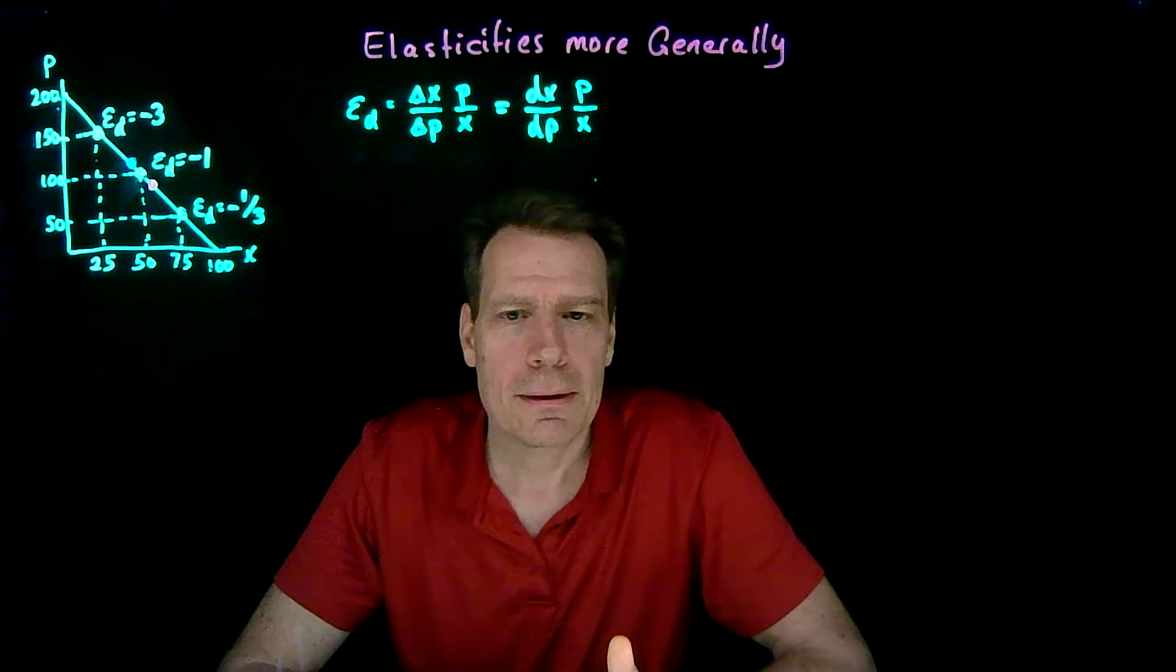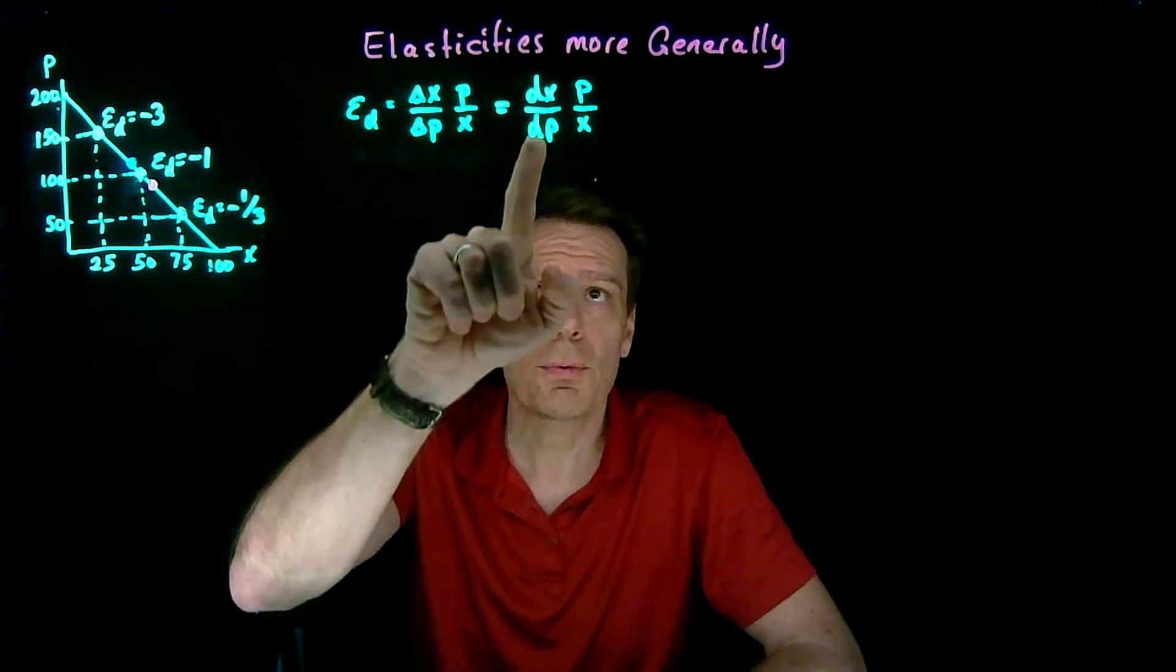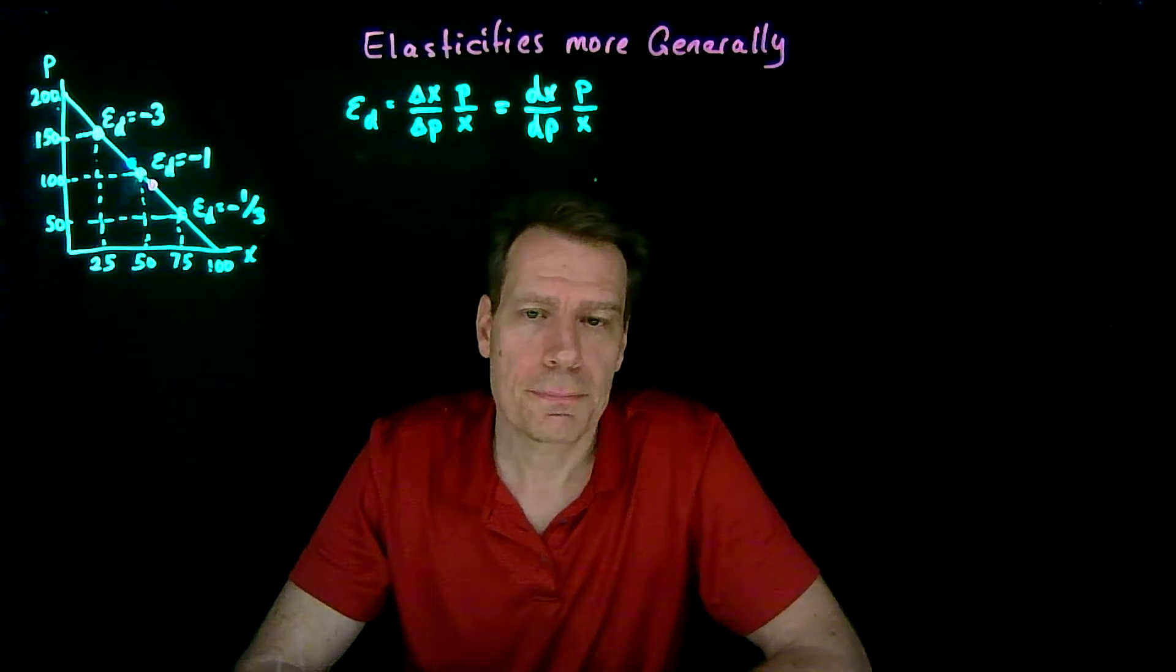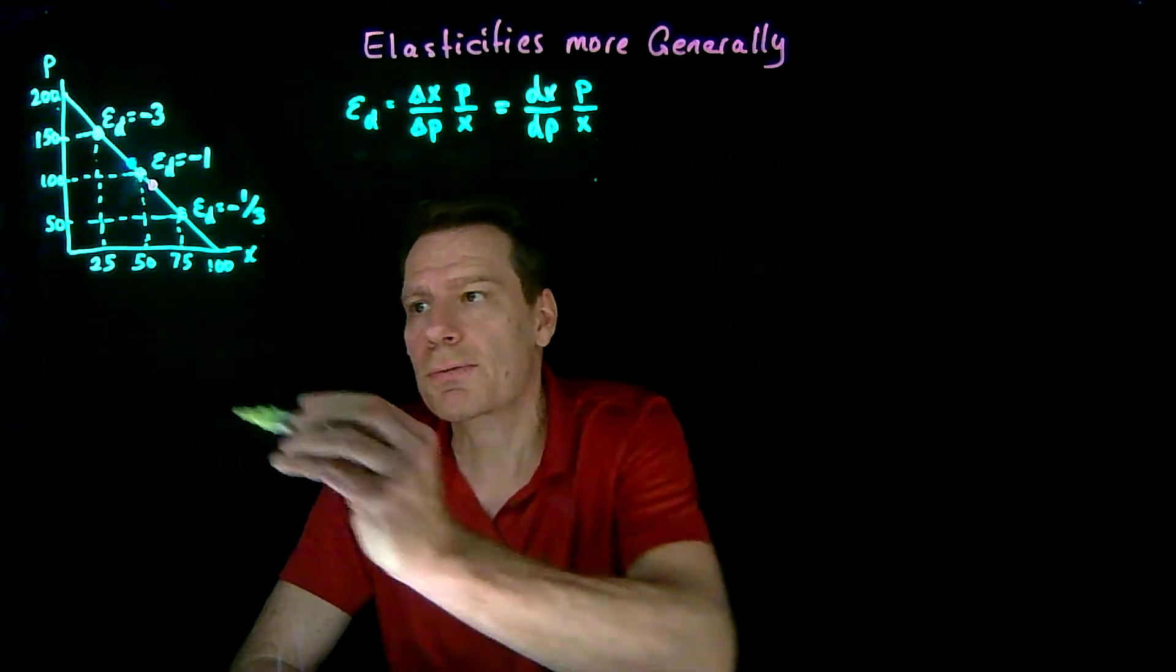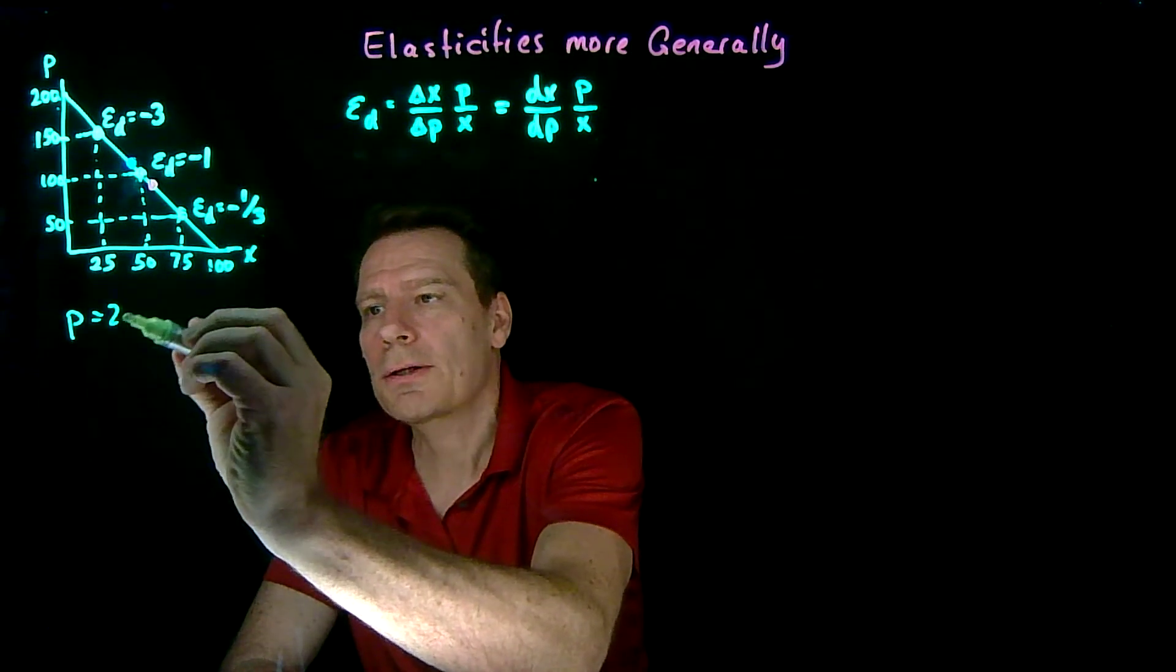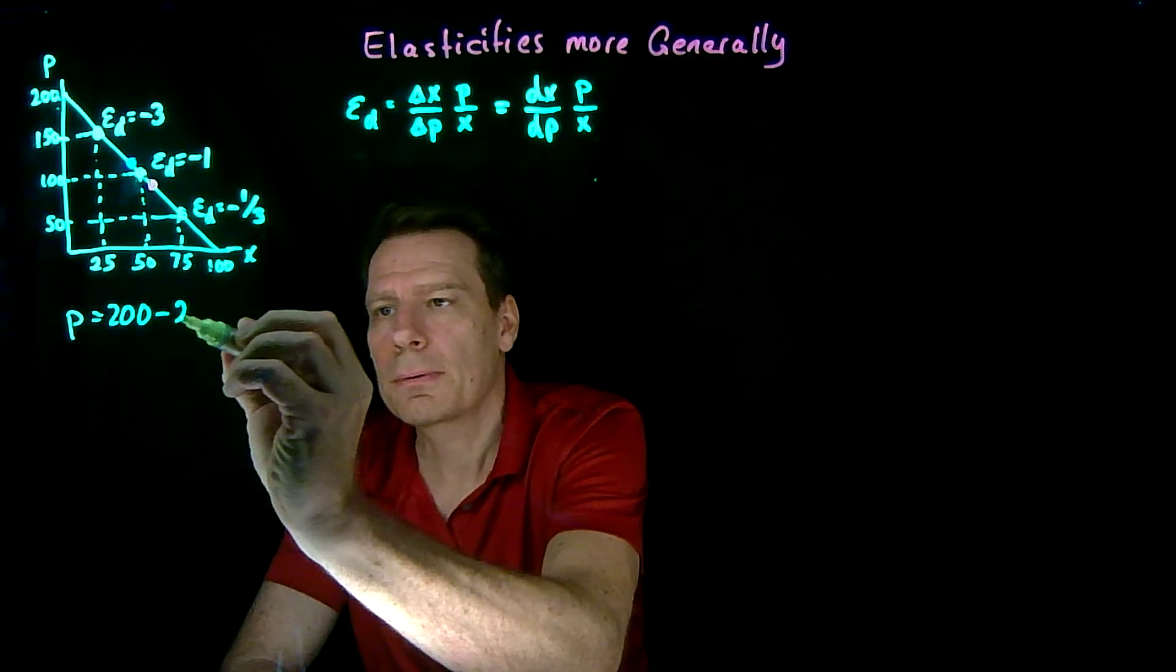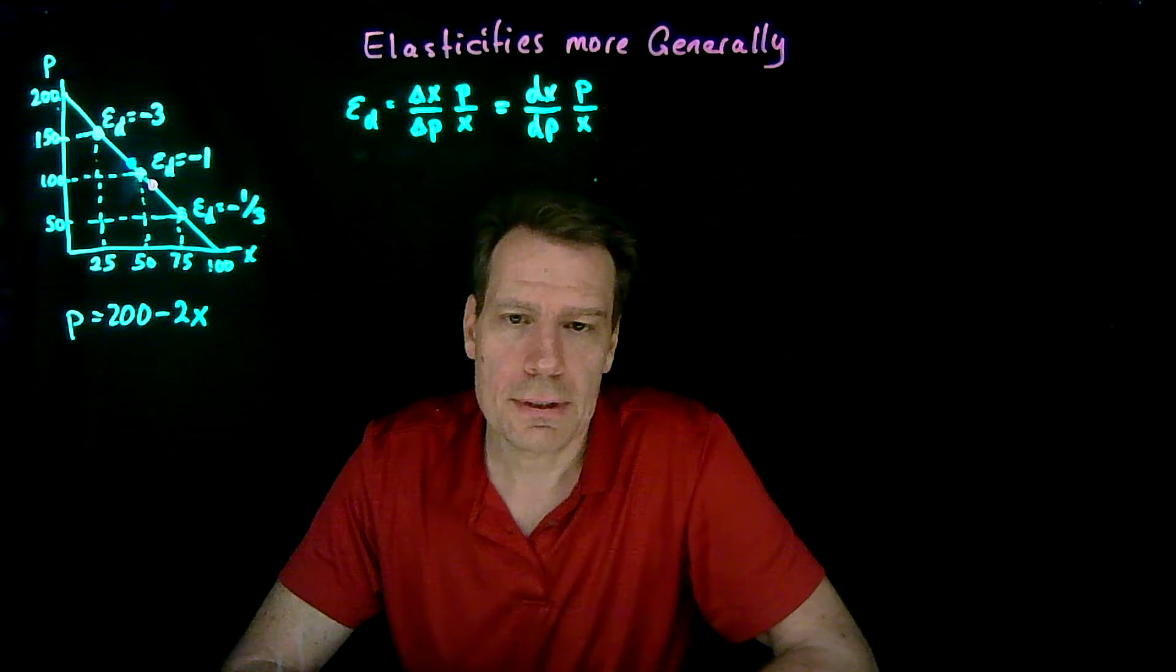So how would we implement this way of calculating price elasticities? Well, we would have to know what the demand function is. Here we have a demand curve, and we can see what the equation for that demand curve is by just recognizing that the intercept is 200 and the slope is minus 2. But that's not a demand function. That's a demand curve.